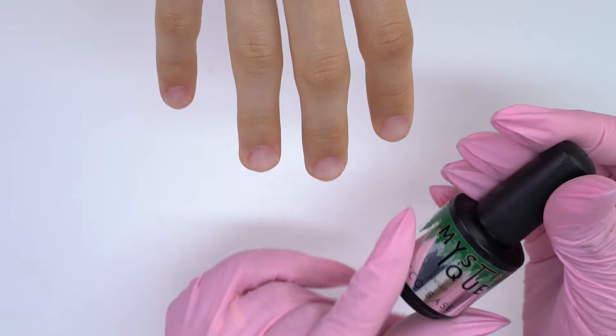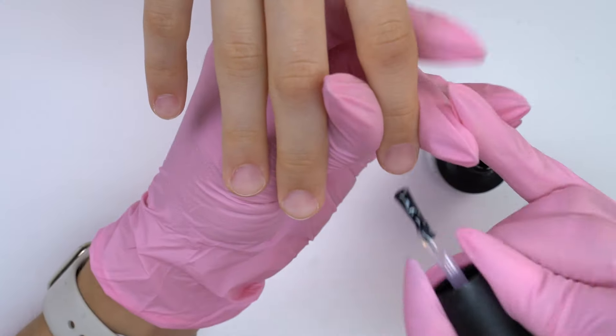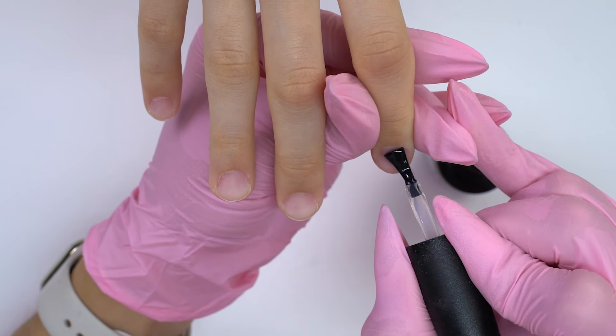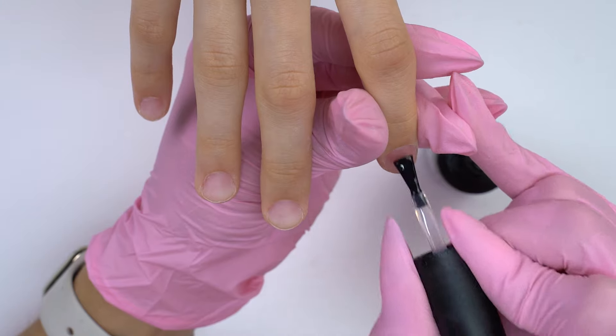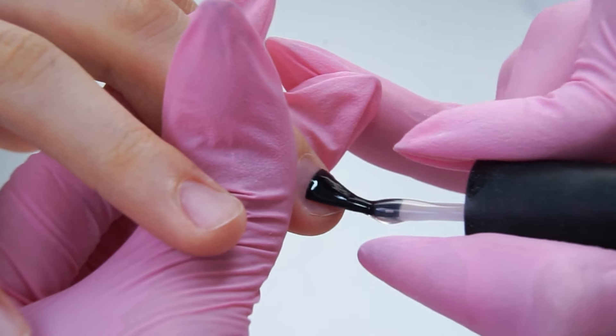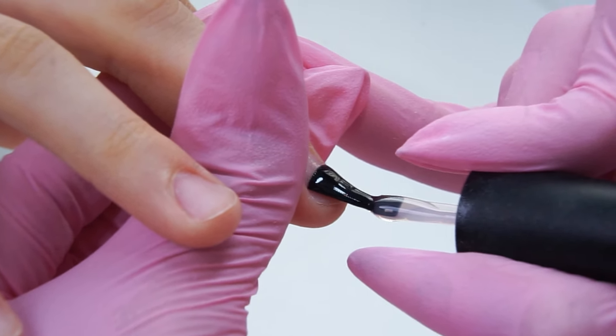As for a base coat, I will use this tacky rubber one by Mystique. In a thin layer with no alignment. Cure in a lamp for one minute.